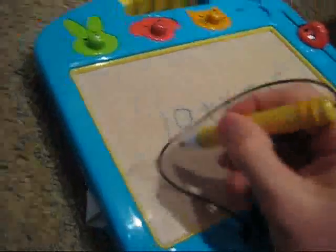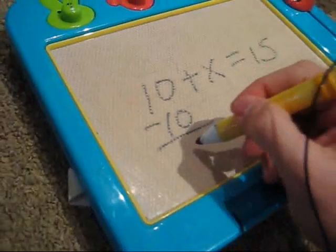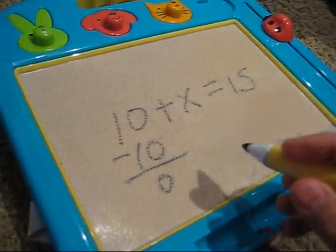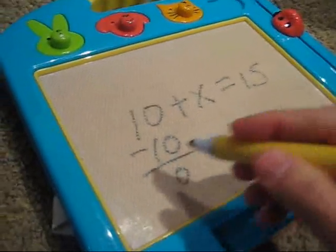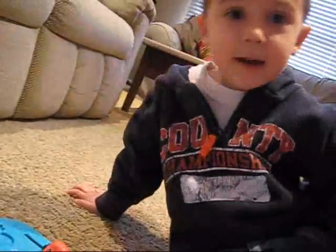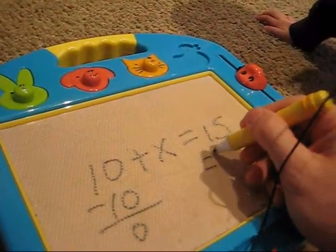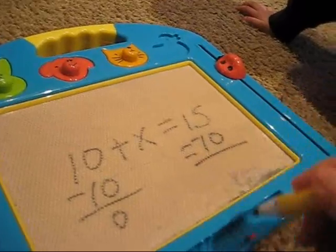What do we do? Ten minus ten equals zero. Zero. Alright, so we have to get what? We have to get what by itself? Zero. We do the other side. And whatever we do on this side, we have to do on the other side. What do we do on the other side? We do... What do we do? On the other side. Oh, we subtract ten on this side? Yeah.